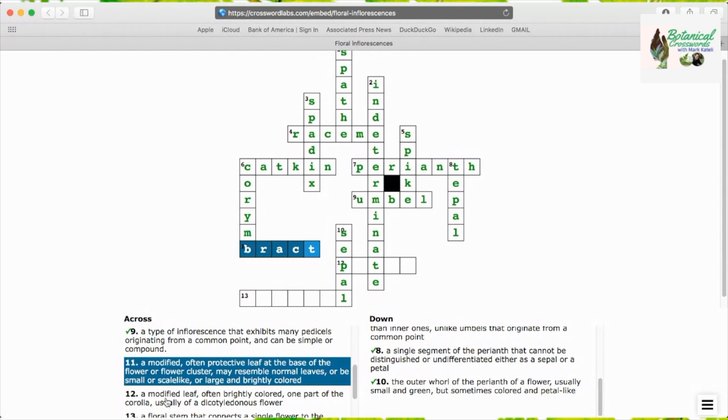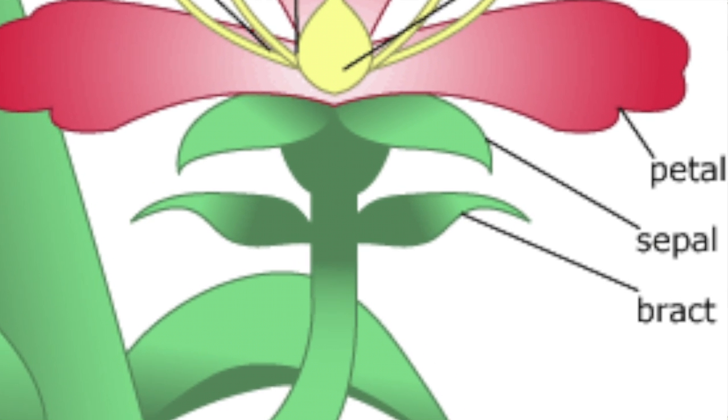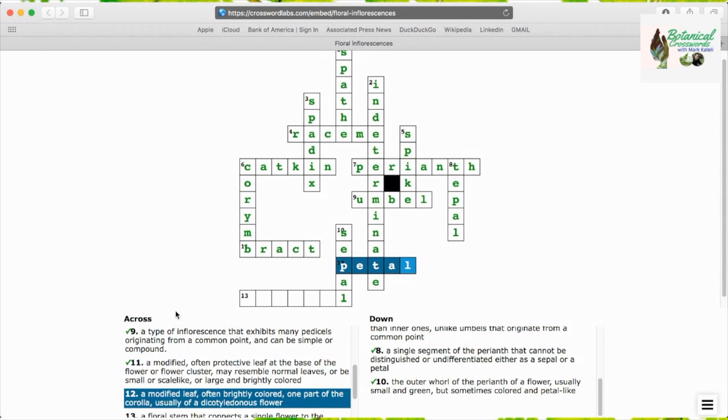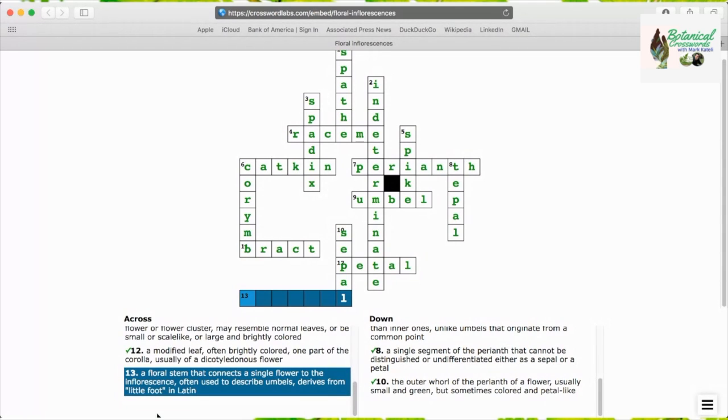Bract is the next answer, a modified, often protective leaf at the base of a flower or flower cluster. They can be large or brightly colored or small. Bracts are not direct structures of the flower.